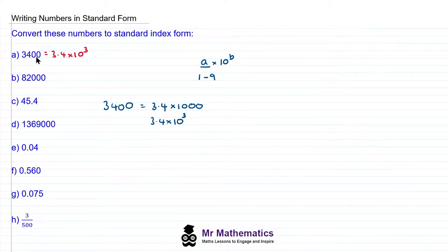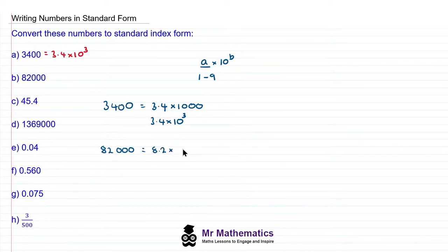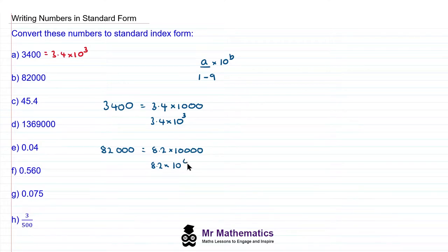So 3,400 is the same as 3.4 times 10 to the power of 3. This is in ordinary form, and this is in standard form. For question B, if we have 82,000, we would write the 82 as 8.2. And now we need to multiply this by 10,000 to get back to 82,000, and that gives us 8.2 times 10 to the power of 4.